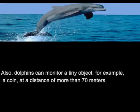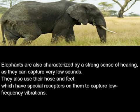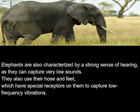Dolphins can monitor a tiny object, such as a coin, at a distance of more than 70 meters. Elephants are also characterized by a strong sense of hearing, as they can capture very low sounds. They also use their feet, which have special receptors, to capture low-frequency vibrations.